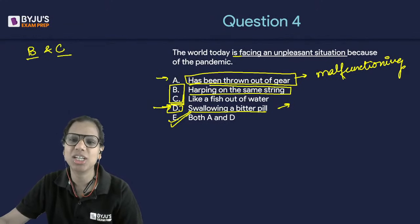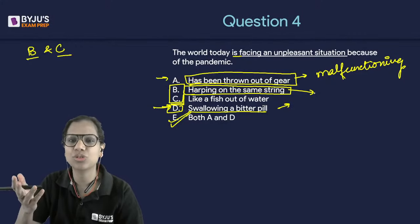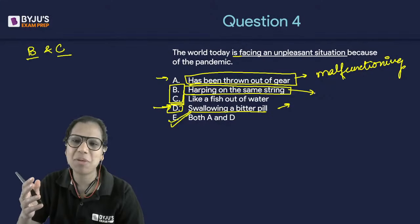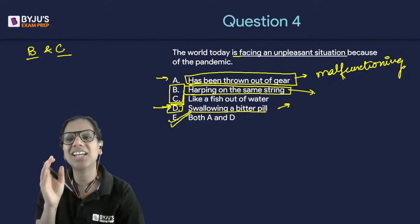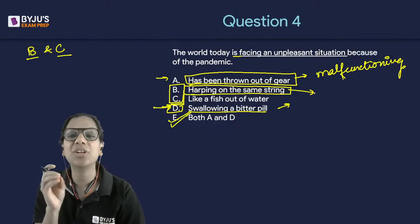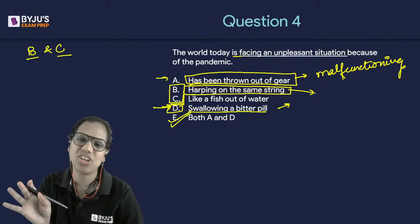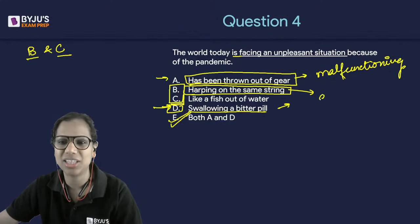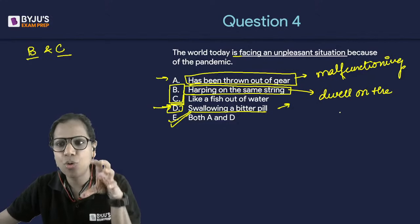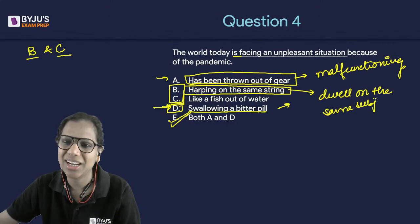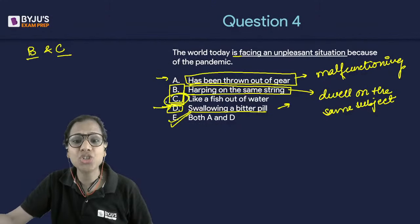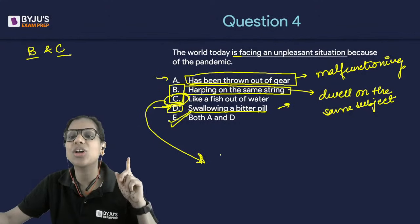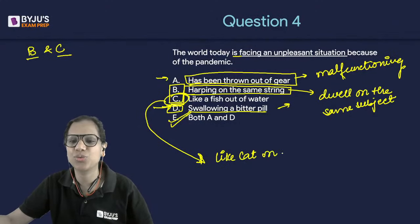When someone harps on the same string, they keep talking about the same subject — dwelling on the same thing, not changing the topic. I associate this with a Hindi idiom meaning the same. 'Like a fish out of water' is synonymous with 'like a cat on a hot tin roof' — both mean someone who is awkward and uncomfortable in a situation. If you are like a fish out of water, again you will be uncomfortable. Both idioms can be associated with each other.